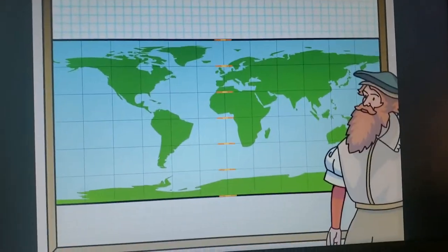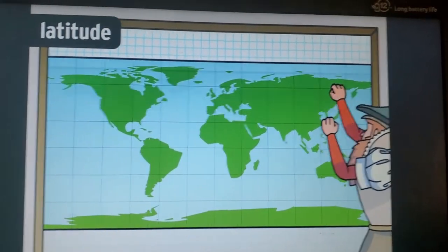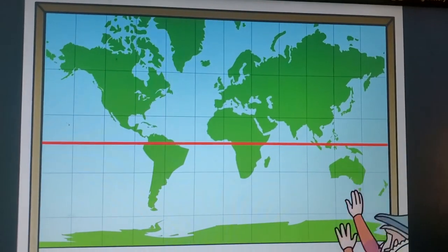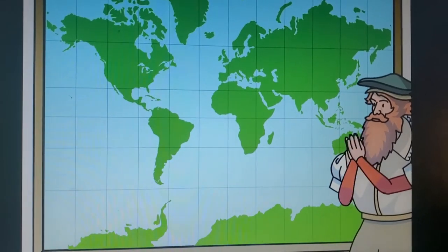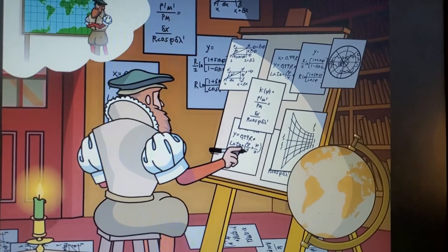Next, Mercator adjusted the lines of latitude, running east-west. He spread them apart to the same degree as the lines of longitude. The farther lines were from the equator, the more they got spread out. Mercator didn't do any of this work physically, like we're showing here. It required a ton of complicated math to make a map with perfect direction.